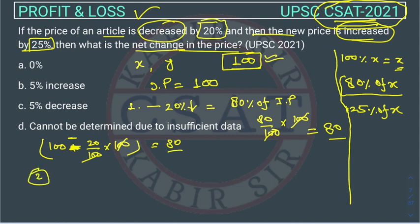Now the second condition is the new price is increased by 25%. So now our current price is 80 rupees plus, because there is an increase, 25%.